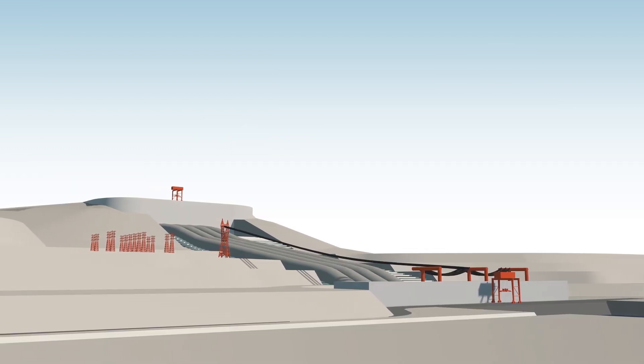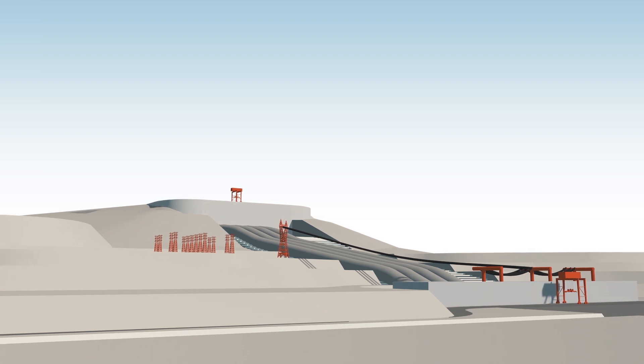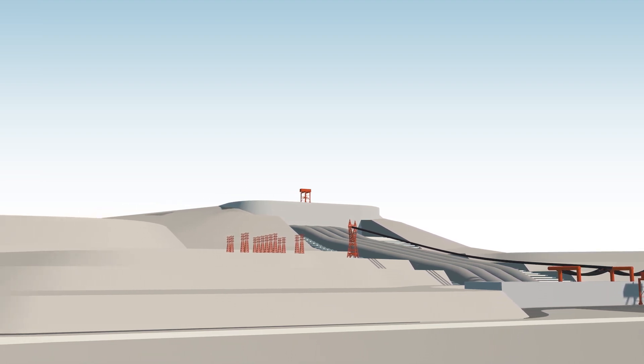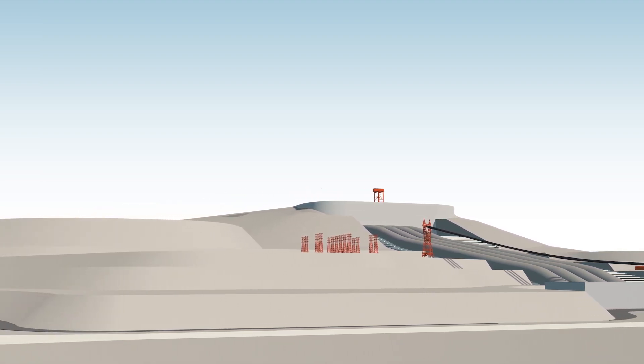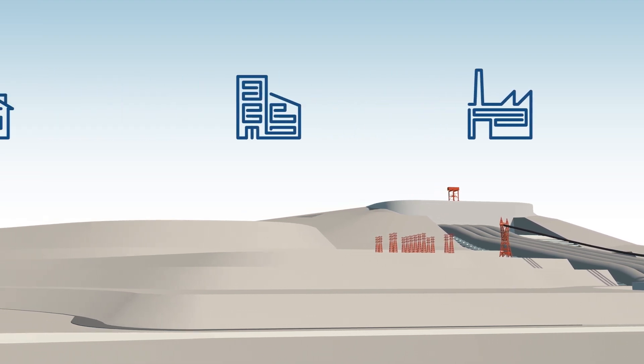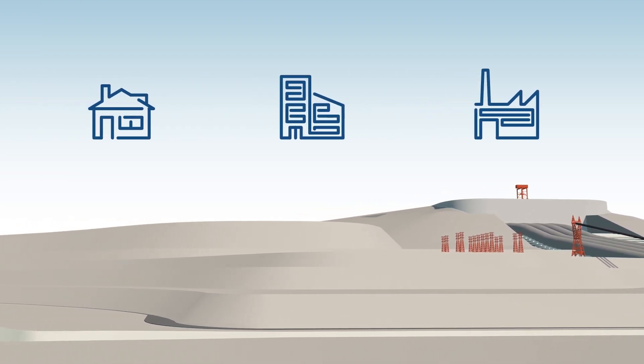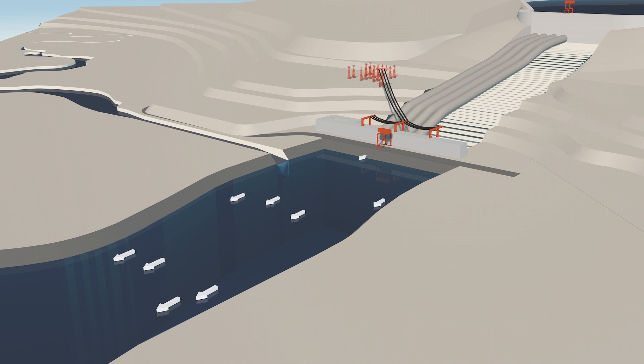The electricity is then transmitted via transformers to the 330-kilovolt electricity transmission grid and from there through distribution networks to factories, offices, and homes. Meanwhile, the water that passed through the turbines flows back into the Kaunas Lagoon through the tailrace channel.